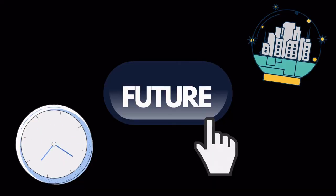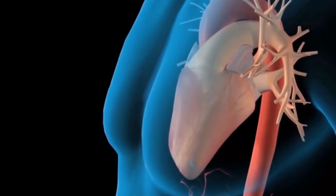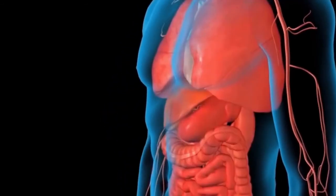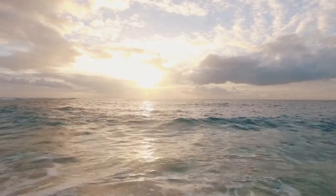Researchers believe that in the future, xenobots, which are about 1 mm in length, can eventually travel into arteries of the heart to scrape out plaques. They can also be used to clear the microplastics in the oceans.